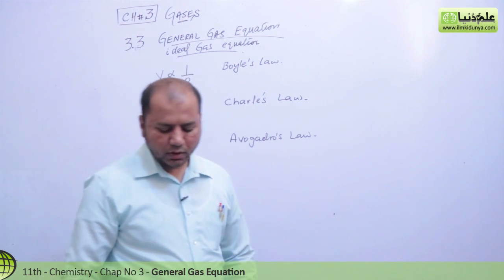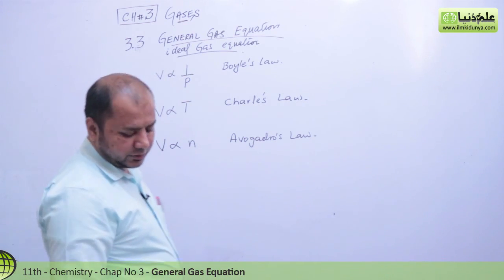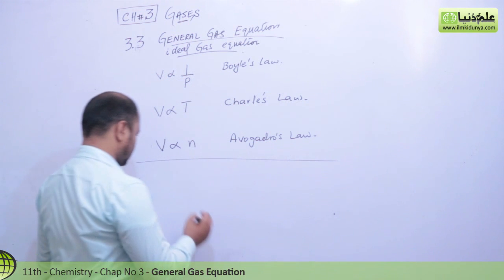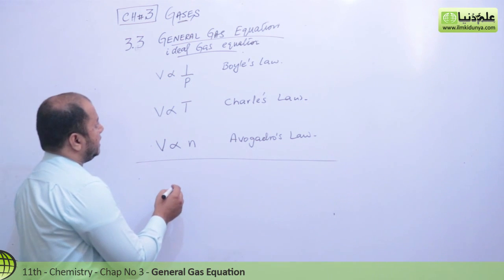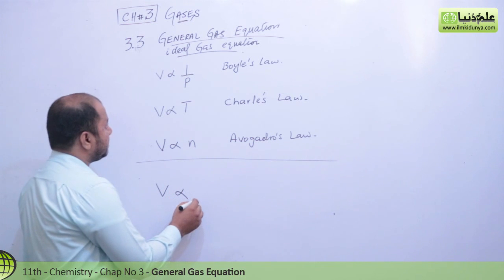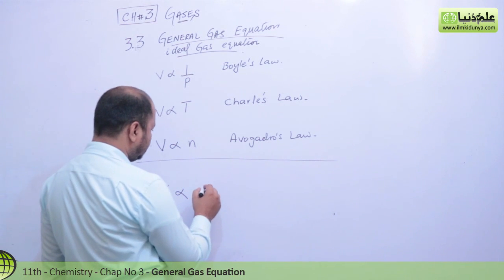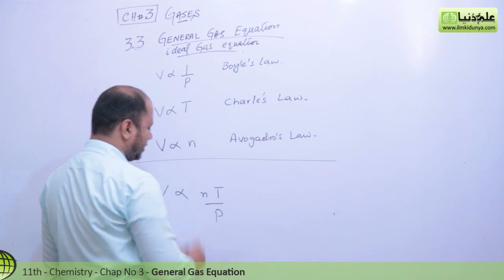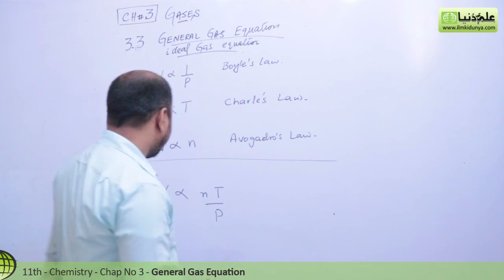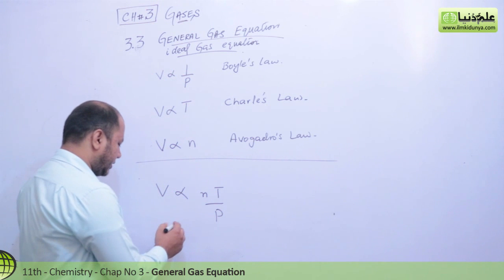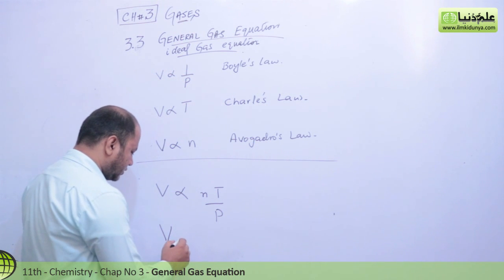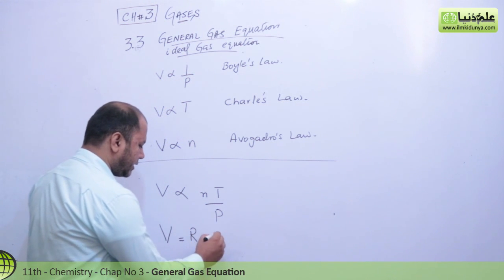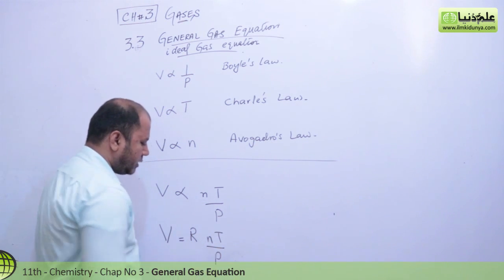All three equations we relate with respect to volume. So let's just make them in a relative form: V is directly proportional to nT over P. When we convert the proportionality sign to equality, we get a constant which is called general gas constant R.